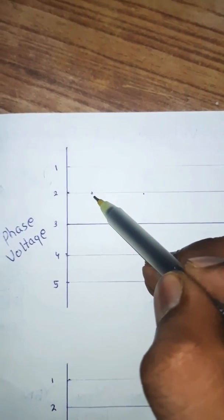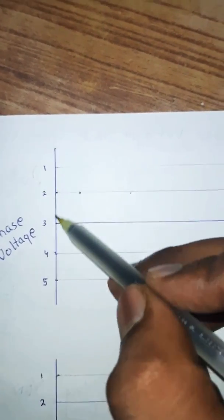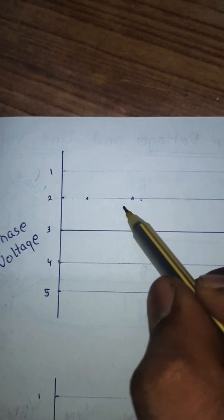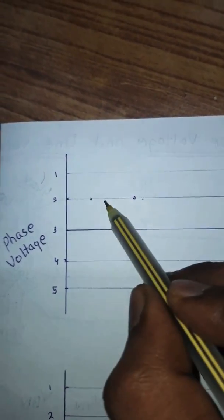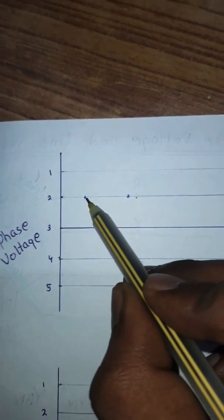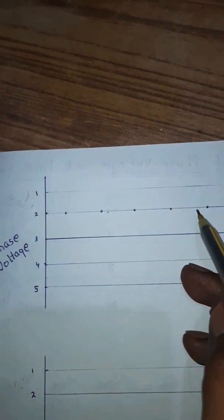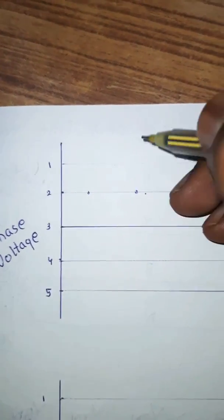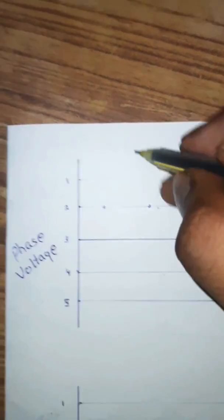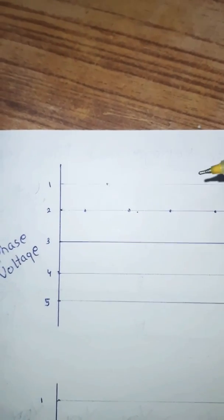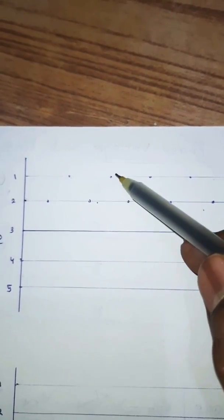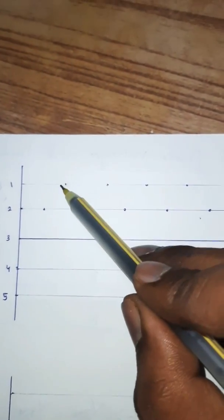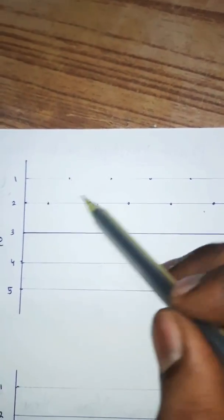Take one point at a distance of three to four mm from the positive y-axis on line second. After that, take another point with double that distance — if the first distance is 5 mm, then this distance would be 10 mm. All these points are equidistant. Now take a point in between these two points, but the point should be on line number one. Similarly, place points between all adjacent points, all on line number one, such that an imaginary triangle would be formed.